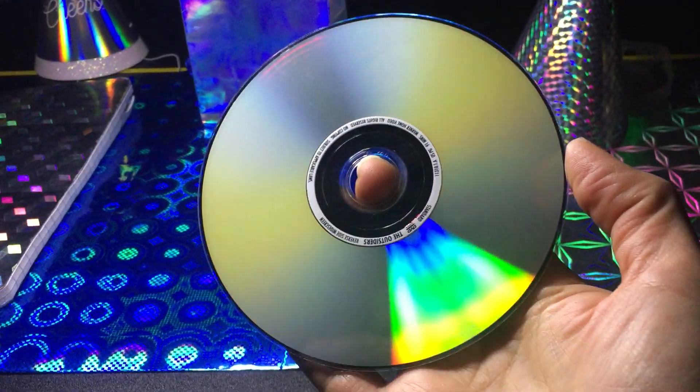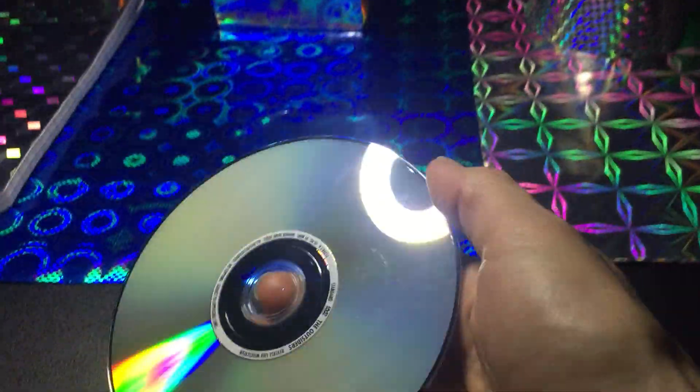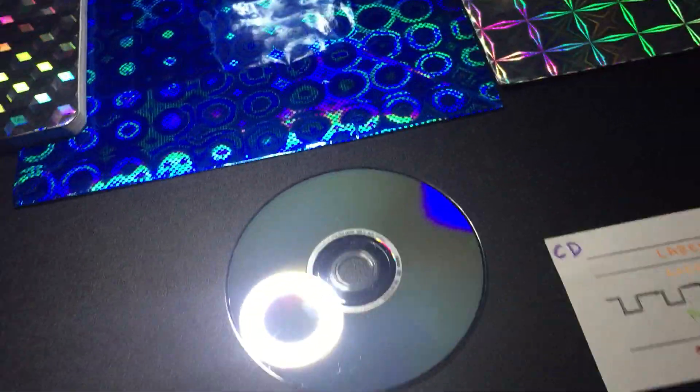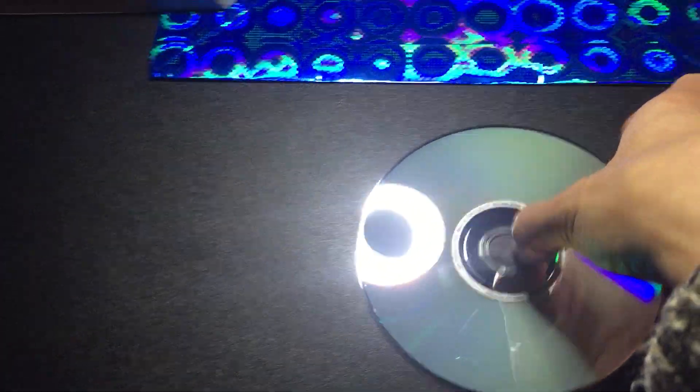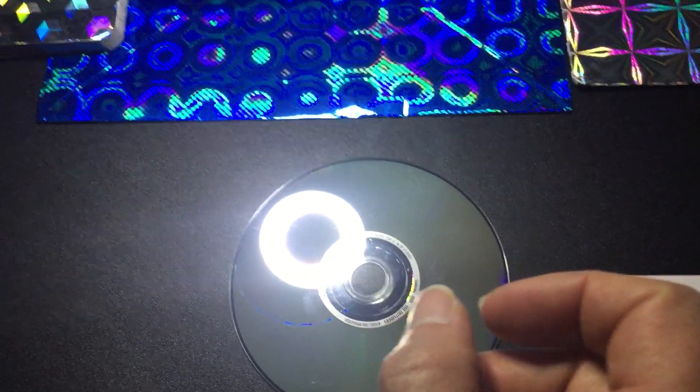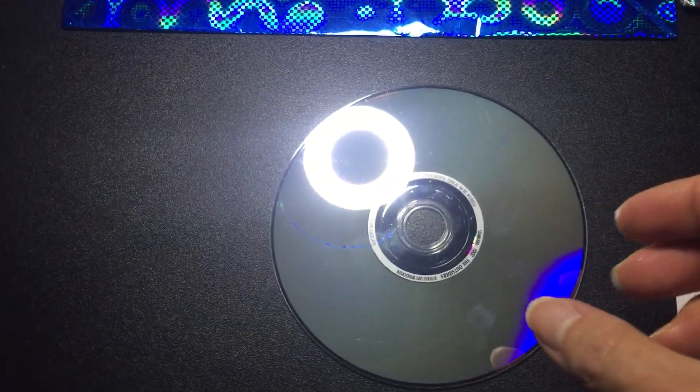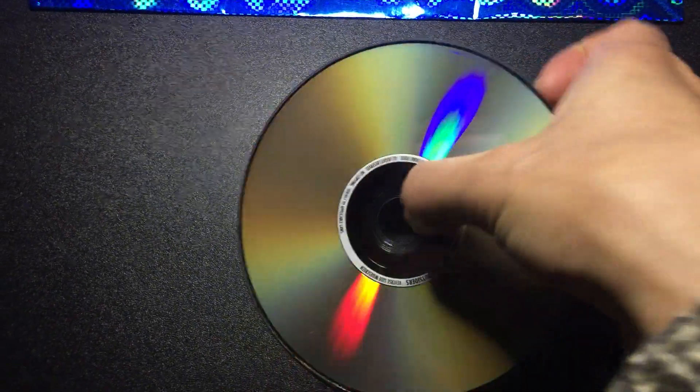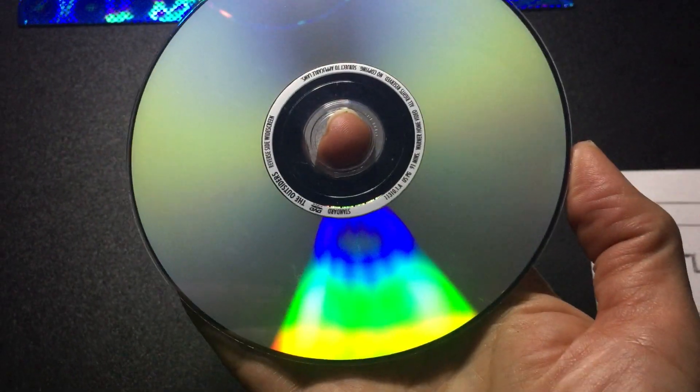You can see this whole range of rainbow colors in a CD because the CD acts similar to a diffraction grating. It has tracks of little grooves and ridges that are basically about 500 nanometers wide, and these diffract the space by about 1.6 microns, creating basically what a diffraction grating with 625 lines per millimeter would look like.